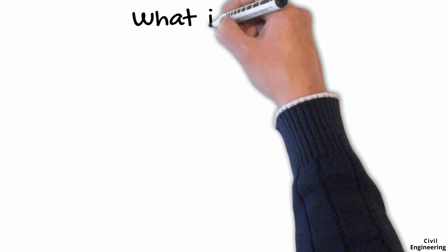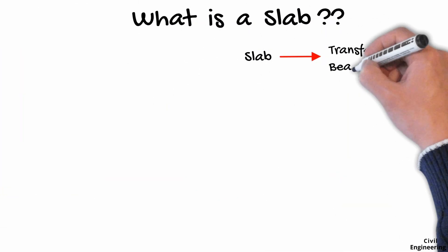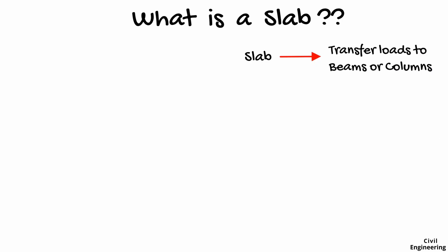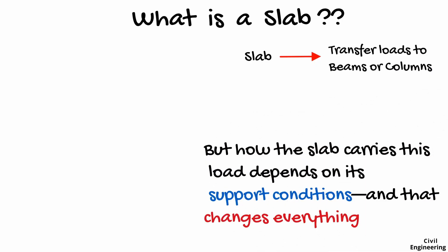The first question that comes up is: what exactly is a slab? A slab is a flat plate that transfers loads to beams or columns. But how the slab carries this load depends on its support conditions, and that changes everything.